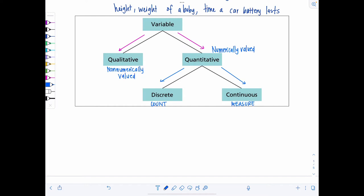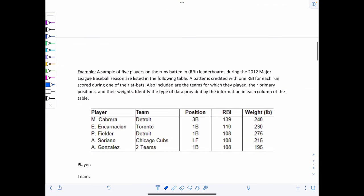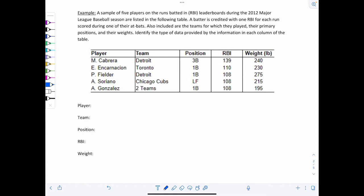So we're going to look at some examples now and determine what type of variable we're working with. A sample of five players on the runs batted in leaderboards during the 2012 Major League Baseball season are listed in the following table. A batter is credited with one RBI for each run scored during one of their at-bats. Also included are the teams for which they played, their primary positions, and their weights. Identify the type of data provided by the information in each column of the table.